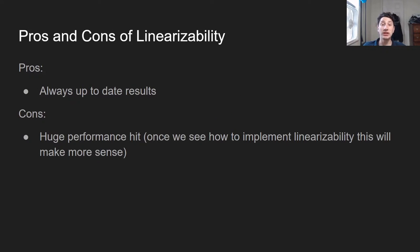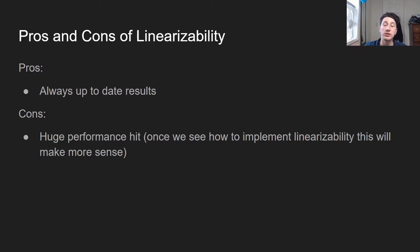So what are the pros and cons of linearizability? The pros are that we get strong consistency — every single result is up to date and we don't have to deal with stale reads. The issue is that there's a huge performance hit, and once we see how to implement linearizability, which is strictly tied in with the idea of consensus — getting a bunch of nodes to agree on something — this will make more sense. In subsequent videos, we'll go into how we might actually implement linearizability.